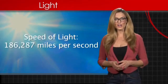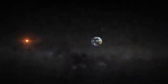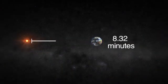Light travels at the fastest speed allowed by the laws of physics, 186,287 miles per second. Even at these speeds, it takes 8.32 minutes for light from the sun to reach Earth.